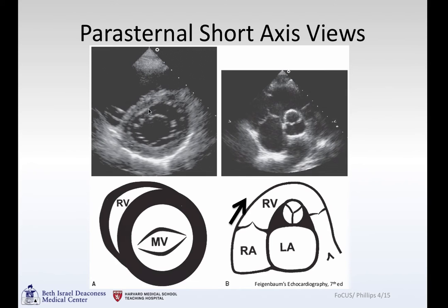Short axis at the level of the mitral valve — here's your mitral valve opening and closing. A little bit further basally: the aortic valve with three leaflets, tricuspid and pulmonic valves. As you're in this view, the marker is pointing off in this direction. Be careful when doing these views not to be off-axis.